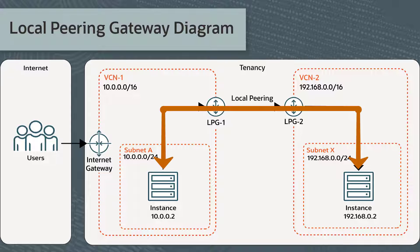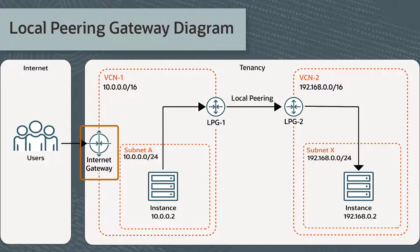These two local peering gateways allow instances, which are on different VCNs, to communicate using private IP addresses without routing the traffic over the internet or through your on-premise network. I've constructed this environment on my Oracle Private Cloud Appliance, which includes an internet gateway on VCN-1, allowing communication with public resources that need to be reached from the internet.